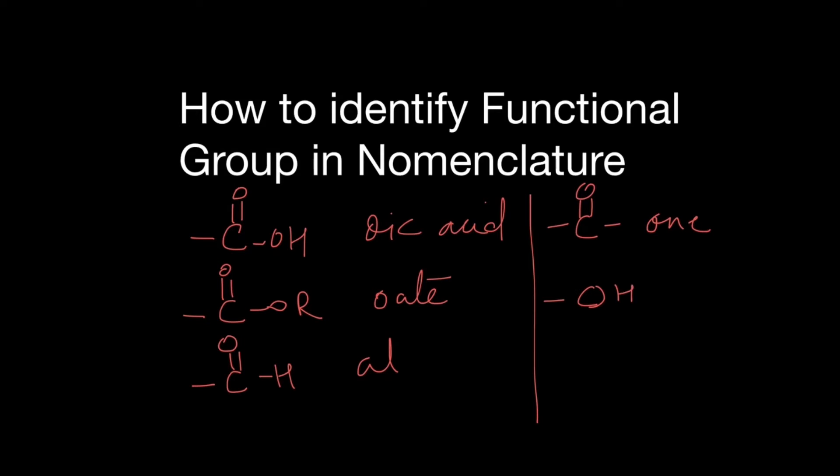To review that material, I told you to remember at least the names of these 6 functional groups. I will review them here. We have Oic acid, C double bond O-O-R is called oate, C double bond O-H is named AL, then we had C double bond O as one, OH as ol and finally NH2 as amine.